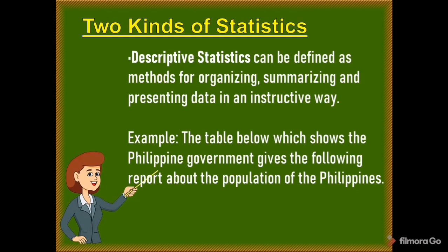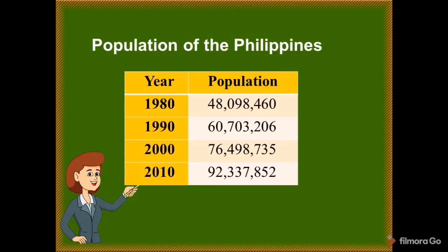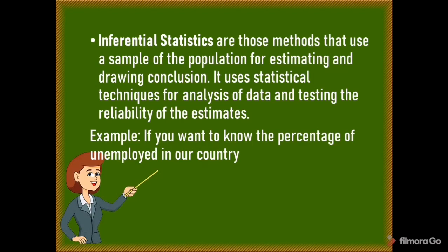There are two kinds of E-Statistics. The first is descriptive statistics, defined as the methods of organizing, summarizing, and presenting data in an informative way. For example, a table showing the increasing population of the Philippines from 1980 to 2010. The second kind is inferential statistics, which uses samples of the population for estimating and drawing conclusions. It applies statistical techniques for analysis and testing the reliability of estimates. An example is determining the percentage of unemployed persons in the country.